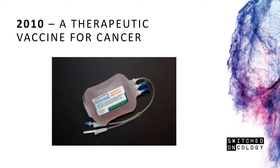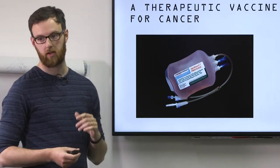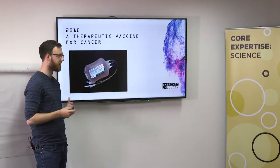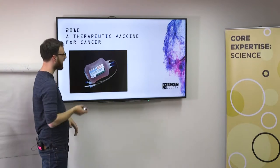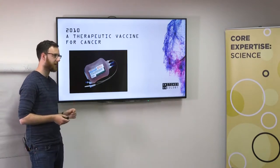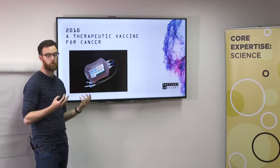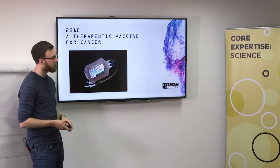2010, this is the first therapeutic vaccine for cancer. Obviously you have prophylactic vaccines for things like cervical cancer, but this was the first vaccine given as treatment for metastatic prostate cancer. This was only developed in 2010. Only eight years later, this has been completely superseded by much cheaper, more effective small molecules. That gives you an idea of the pace of innovation in cancer.